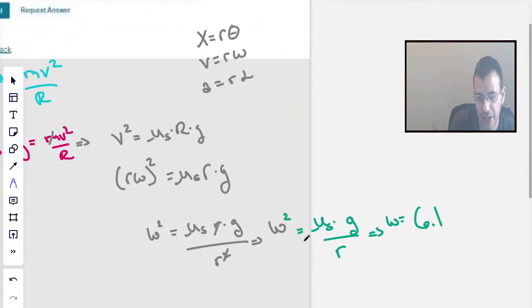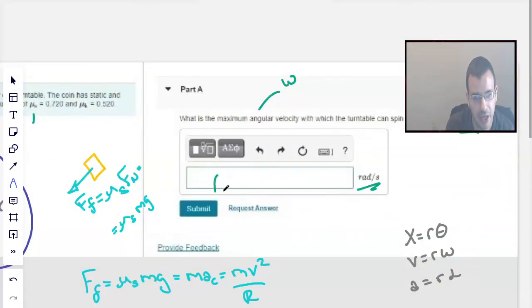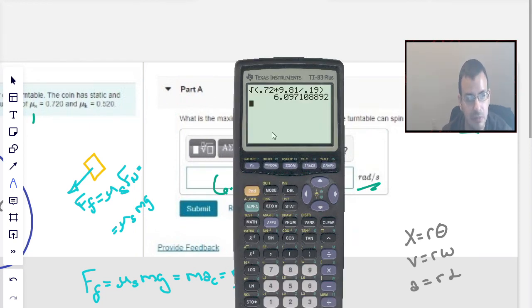So, 6.1. And this is radians per second. So, the answer for this one, at least what I would try, 6.1. Maybe they want 2 significant figures, maybe 6.10. Yeah, 6.10 would be good as well.